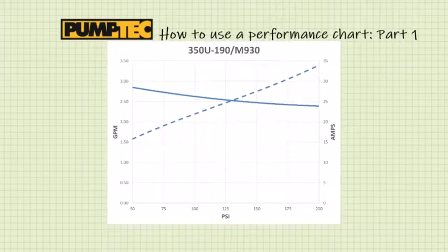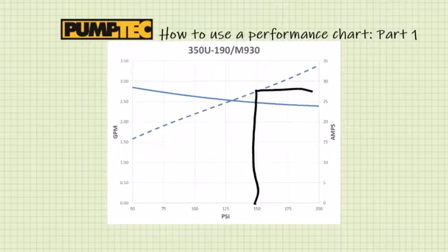Use the numbers on the right side of the chart to find the amps. So you go up at 150 PSI, go over, and this pump would do 28 amps at 150 PSI.